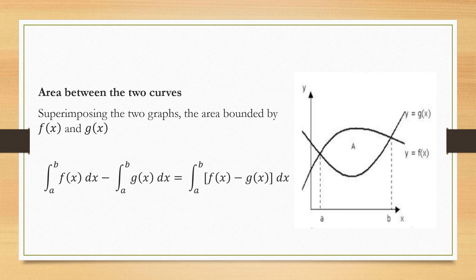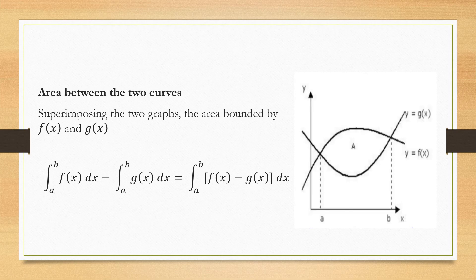Now let's discuss the superimposing of the two graphs where we have two graphs here, f(x) and g(x), which are intersecting along with each other. So how are we going to find the area of this?